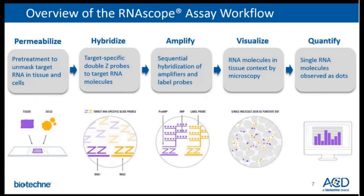Here is an overview of the RNA scope workflow. The RNA scope assay starts with permeabilizing the sample with a pretreatment kit in order to unmask the target mRNA and allow the target probe to penetrate into the cell to hybridize to the target RNA sequence. Once the target probe binds to the target RNA sequence, detection is enabled through an amplification cascade involving sequential hybridization steps to build up a tree-like structure. RNA molecules can be visualized under the microscope as punctate dots, which can be quantified semi-quantitatively or quantitatively using image analysis software.